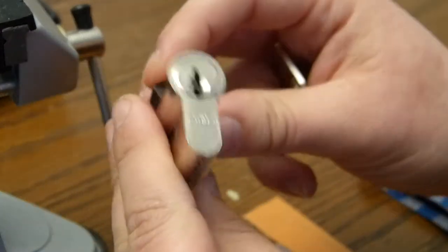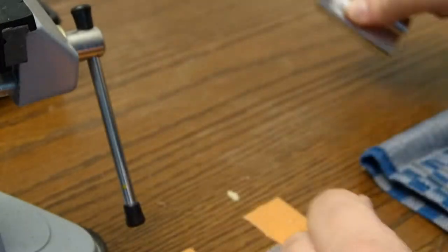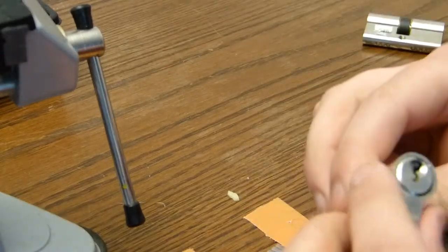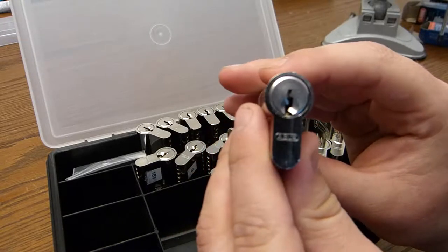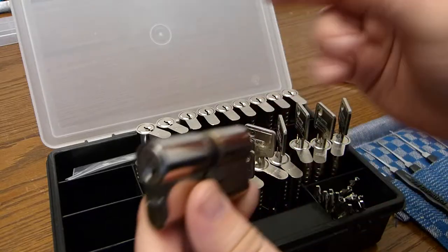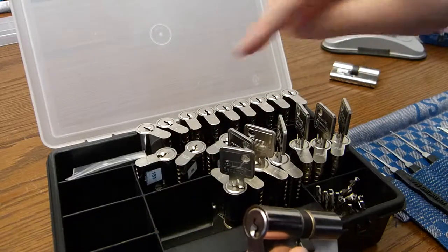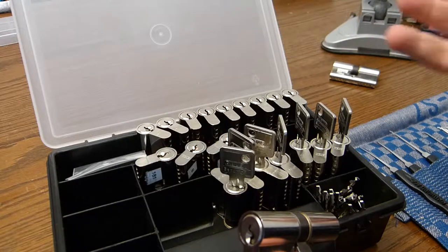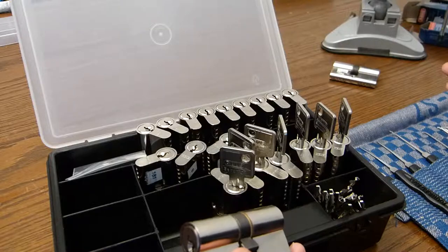This is an Abus C83 and it doesn't have the same function. I'm not going to cut this lock right now because I want to cut them all at once and swap key pins between them. So I have twenty more locks to play with, to impression with.